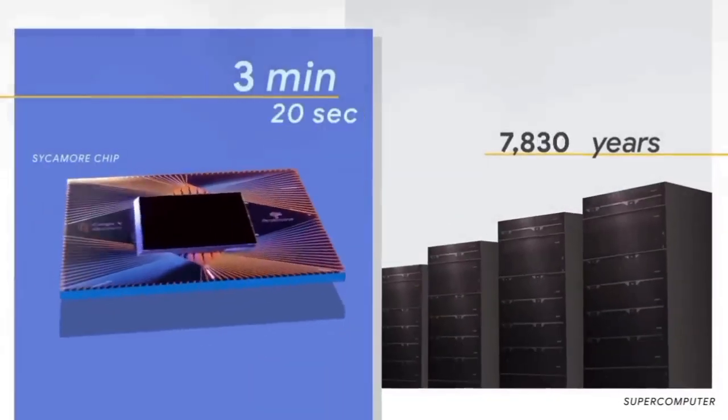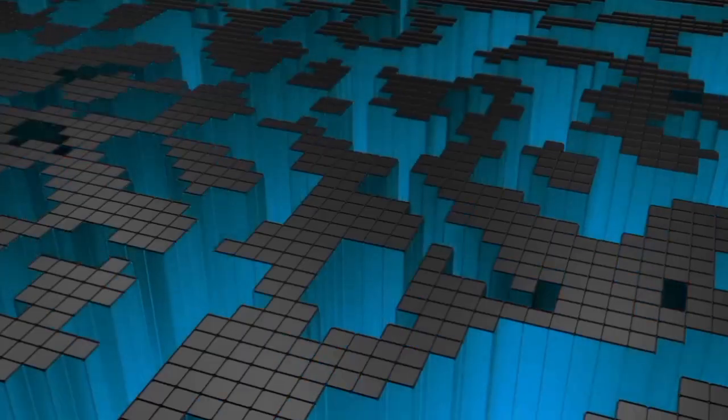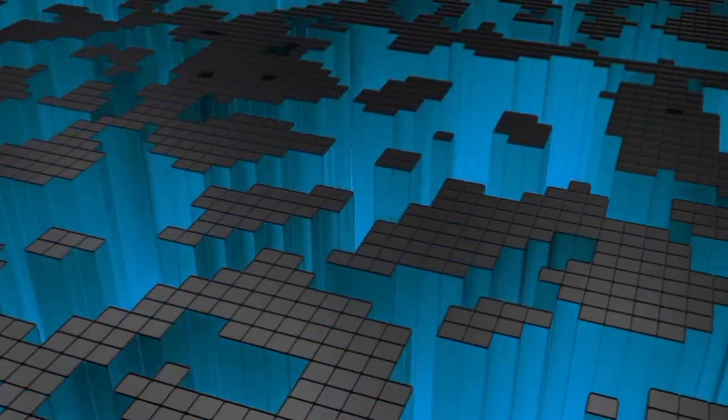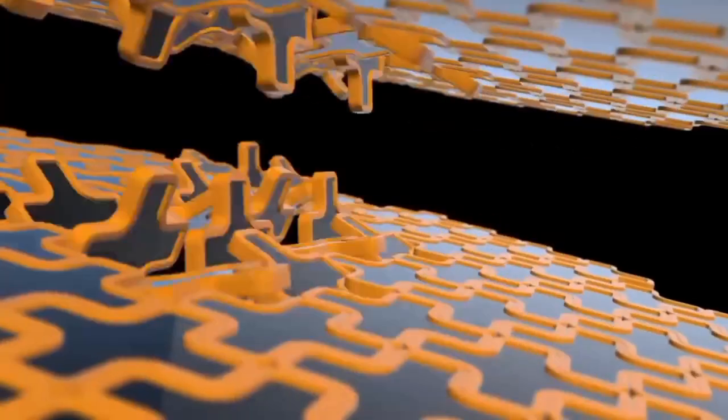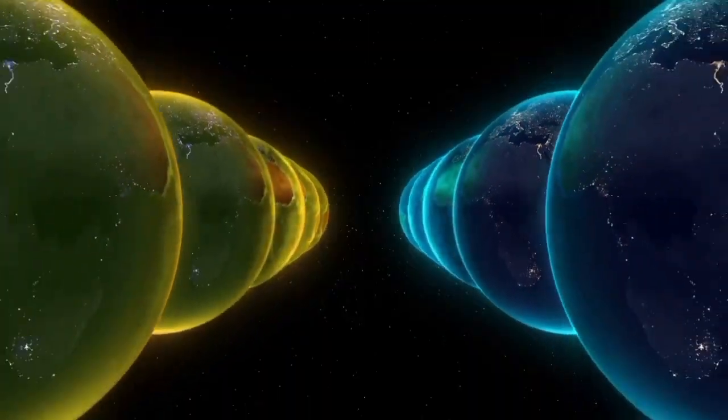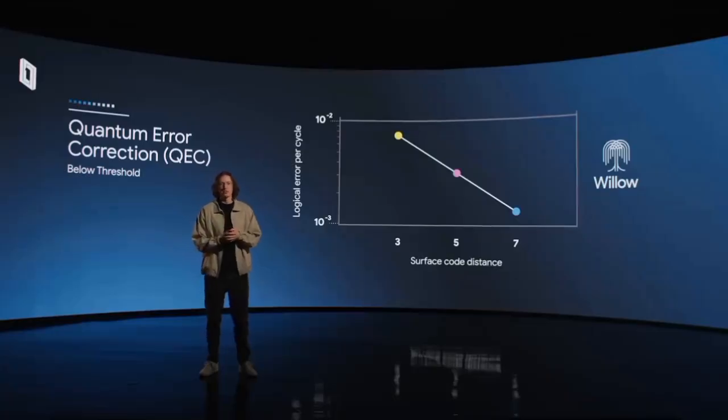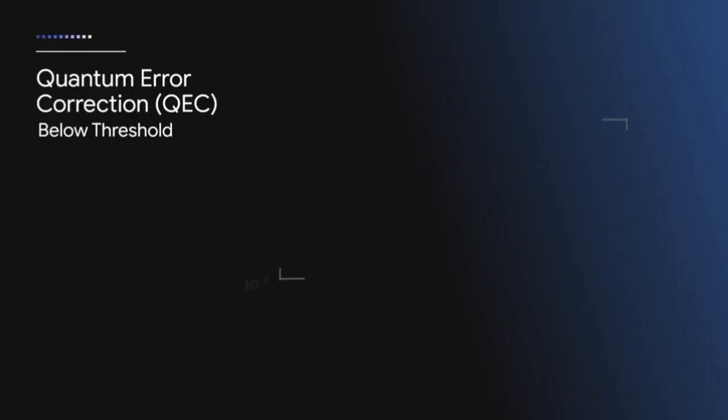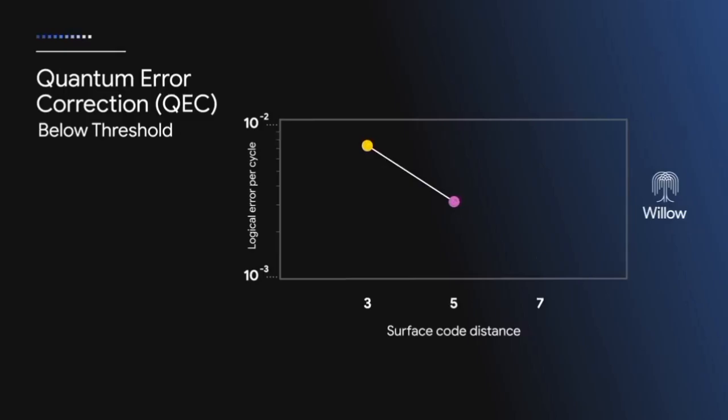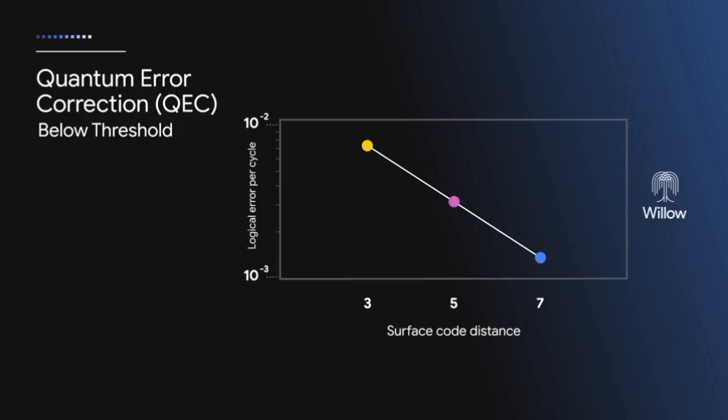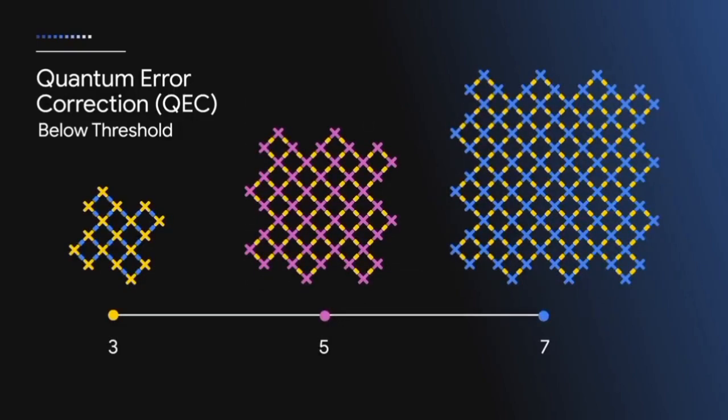Small changes in the environment can cause errors. And with regular quantum computers, the more parts means more chances for errors. And that's how things usually work. But with Willow, it completely flips the role. Instead of getting worse with size, it actually gets better at fixing its own mistakes. Look and try to understand with these images, which illustrate one of Willow's biggest breakthroughs.